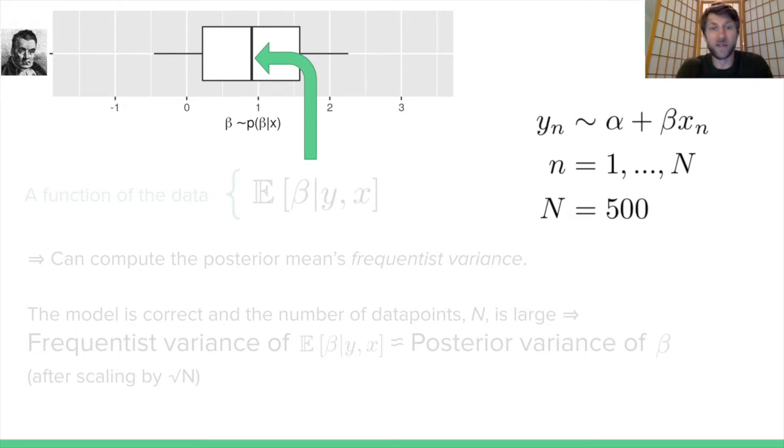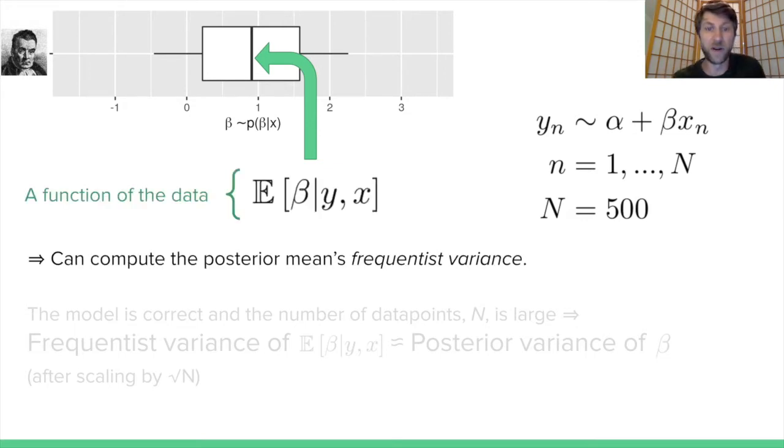What do I mean by the frequentist variance? This posterior mean is conditional on the data y and x. That means it's a function of the data. If we were to have gotten a different draw of the data, different values of y and x, this posterior expectation would have been different. If we could imagine drawing y and x from the same data generating process that gave us the data we already saw, we could compute the variance of this expectation. That's what we mean by the frequentist variance of a posterior expectation.